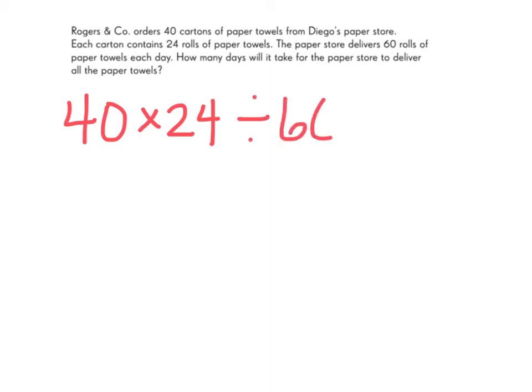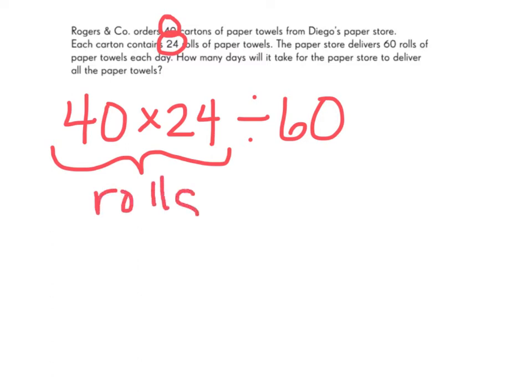We're going to build our number sentence as follows. We have 40 cartons of paper towels which contain 24 rolls of paper towels, so that will express as 40 times 24. That represents our total number of rolls. If the paper store delivers 60 rolls of paper towels each day, how many days will it take to deliver all of our rolls? We'll solve that by dividing by 60. Now that we understand the problem, I'll explain how to simplify this expression and find our answer.